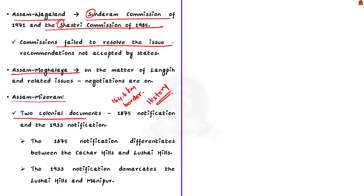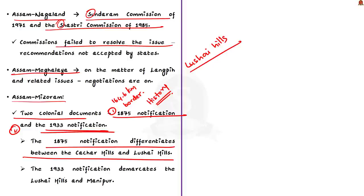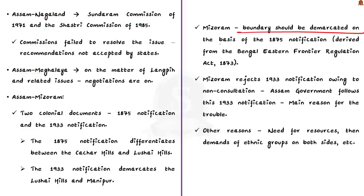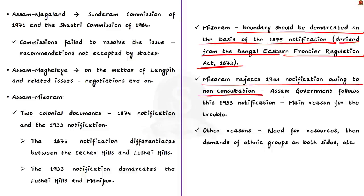There are two colonial documents that are at the heart of this ongoing boundary conflict. One is the 1875 notification and the other is the 1933 notification. During the colonial era, Mizoram was known as Lushai Hills. In the 1875 notification, the Kachar Hills and Lushai Hills have been differentiated. But in 1933 notification, the Lushai Hills and Manipur have been demarcated. The North Kachar Hills is in the state of Assam. Regarding these notifications, Mizoram states that boundary should be demarcated on the basis of 1875 notification only. This notification was derived from the Bengal Eastern Frontier Regulation Act of 1873. Therefore Mizoram rejects the 1933 notification, stating that Mizo society was not consulted before framing of this notification. On the other hand, Assam government follows the 1933 notification and this is the main reason for the trouble.